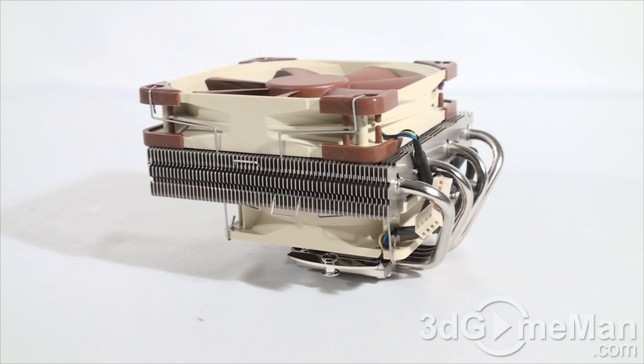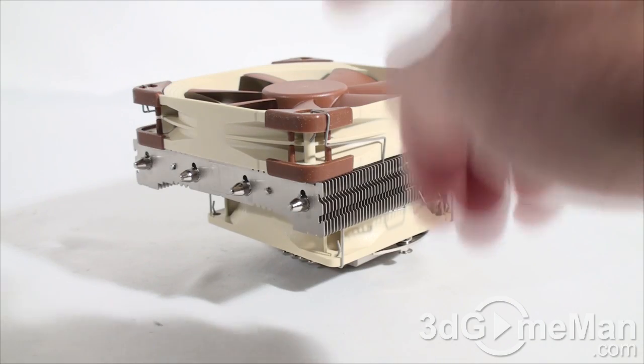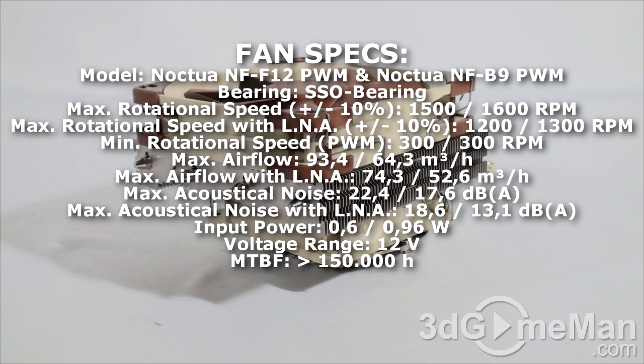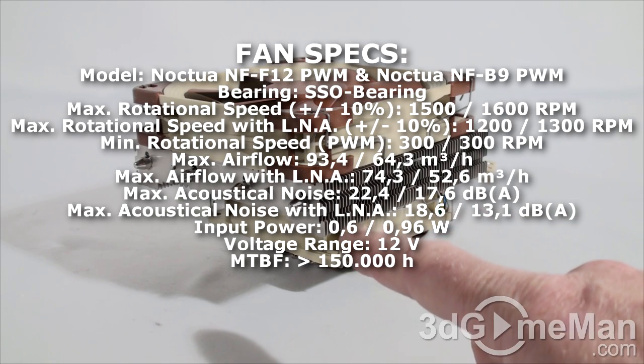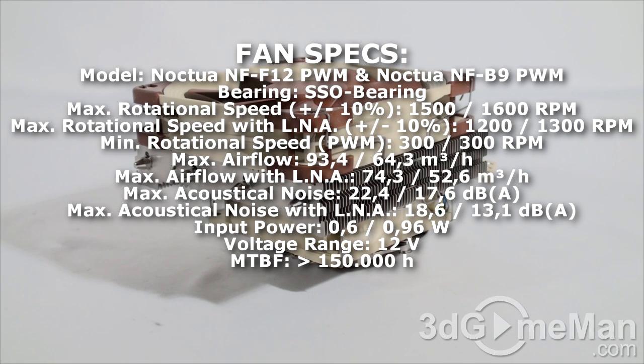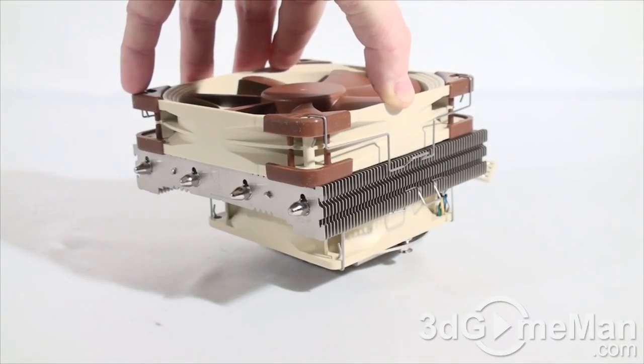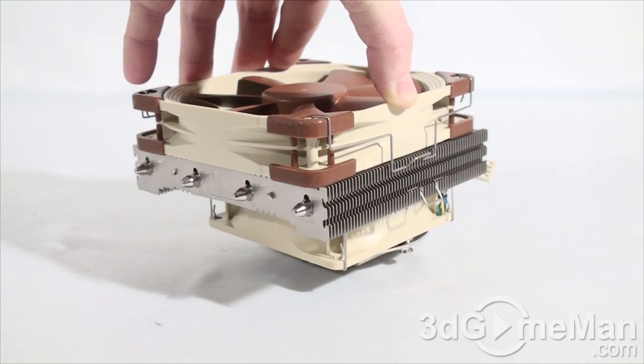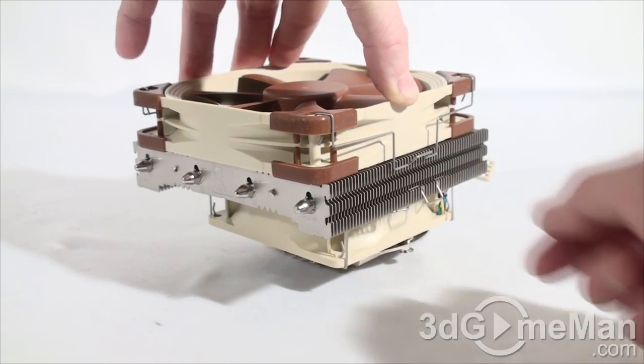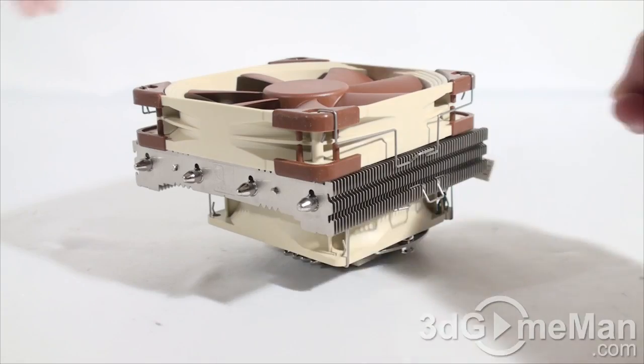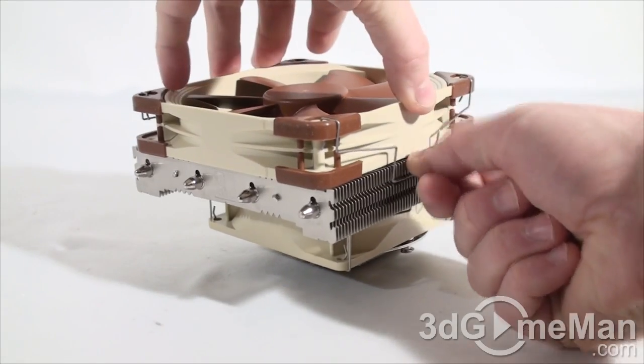They include two fans. The one at the top is the NF-F12 PWM 120 millimeter fan and the one at the bottom is the NF-B9 PWM 92 millimeter fan. By the way they have these clips on either side, you just kind of pop them off if you want to take the fan off completely at the top or if you want to reposition it. Just take them off and reposition it where you want it and then clip them into place.